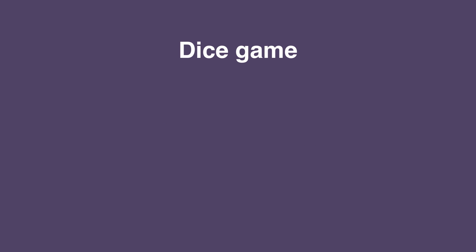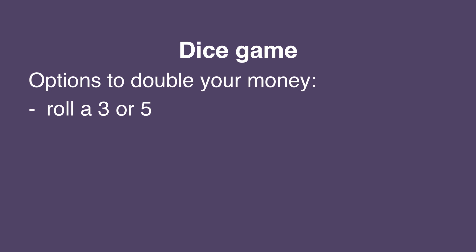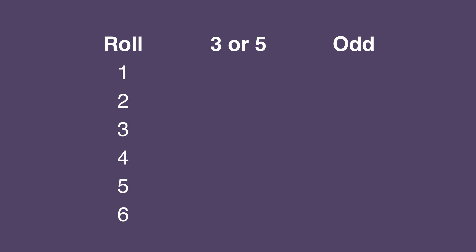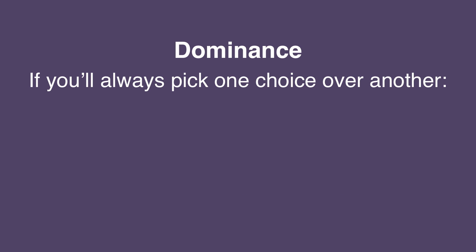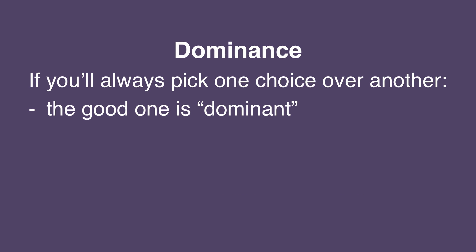Let's say we're playing a game with dice. I offer you two options: you can double your money if you roll either a 3 or a 5, or you can double your money if you roll an odd number. Of course you'll pick doubling your money with an odd number — 3 and 5 are both odd numbers, so you'll win either way, but with the latter option you'll also win with a 1, making it the better choice. Anytime you'll always pick one option over another, the preferable choice is said to be the dominant choice, and the worst choice is said to be dominated.